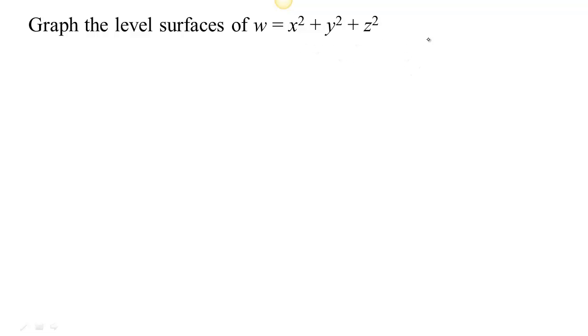So here we have a function that we can think of as having three inputs and one output because we have three numbers that go in, x, y and z, and from those three numbers we're able to figure out the output, this fourth number, w. We can't look at the graph of this because the graph requires looking at inputs and outputs together and that would require four dimensions which is hard for us to visualize.